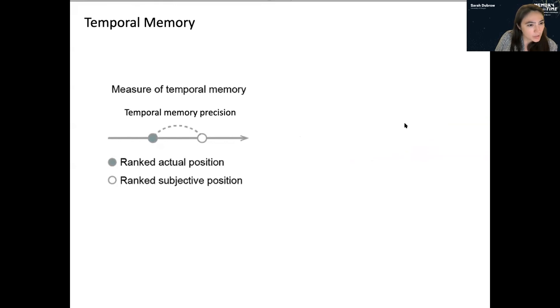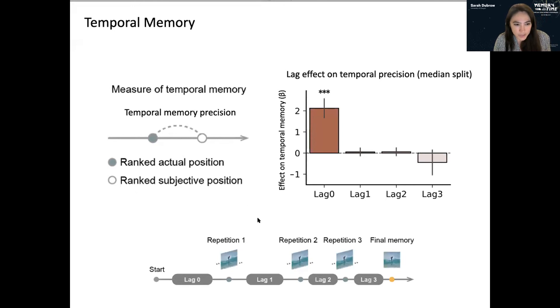So what we want is a sort of item level measure of temporal memory precision. So we can get that by comparing the rank actual position to the rank subjective position. So the closer they are, the more precise we think that is. And so we're just going to binarize items into high precision and low precision and look at effects that predict that. So showing the same lag effects on temporal memory. Here, what we see is a strong recency effect. So the longer lag zero is the better for temporal memory.